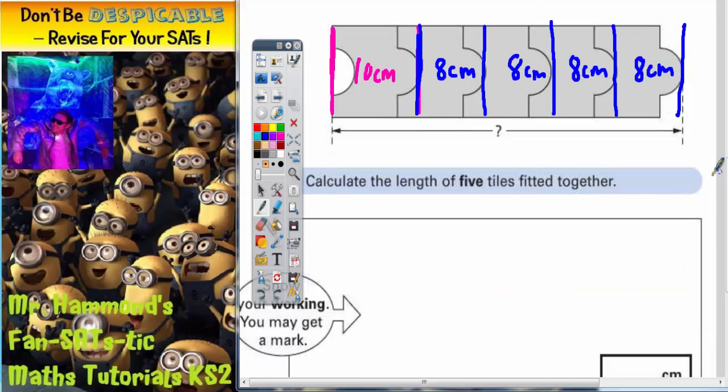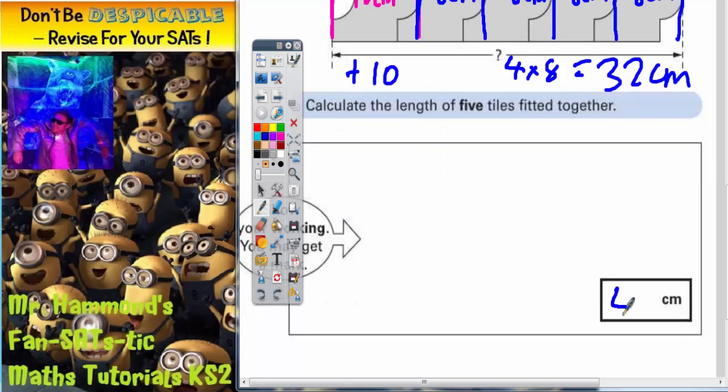So all that remains to be done now is add these together. We've got 4 lots of 8, so 4 times 8 is 32 centimeters. And then we've got an extra 10, so add on the extra 10. The total answer is going to be 42 centimeters.